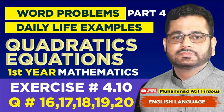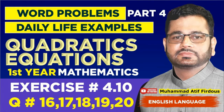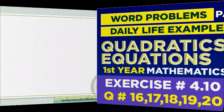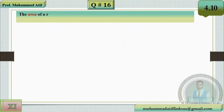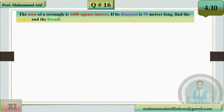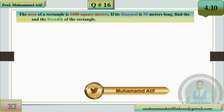Students, now we are going to complete our last 5 questions related to your quadratic equation from exercise 4.10. We start with question number 16: the area of a rectangle is 1680 square meters. If its diagonal is 58 meters long, find the length and breadth of the rectangle.